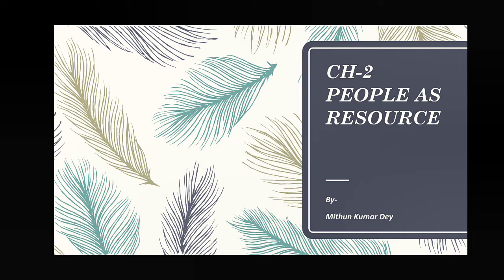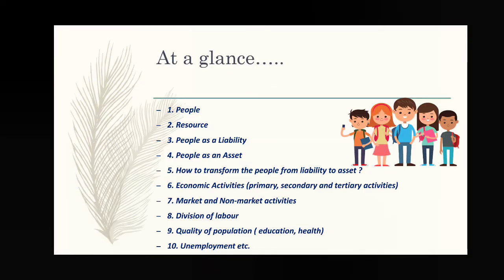We have already discussed the basic concepts and main topics of this chapter in the last class. The key topics include: who are called people, what is resource, why people are called liability or asset, how to transform people from liability to asset, economic activities and their types, market and non-market activities, division of labor, skilled and unskilled labor.